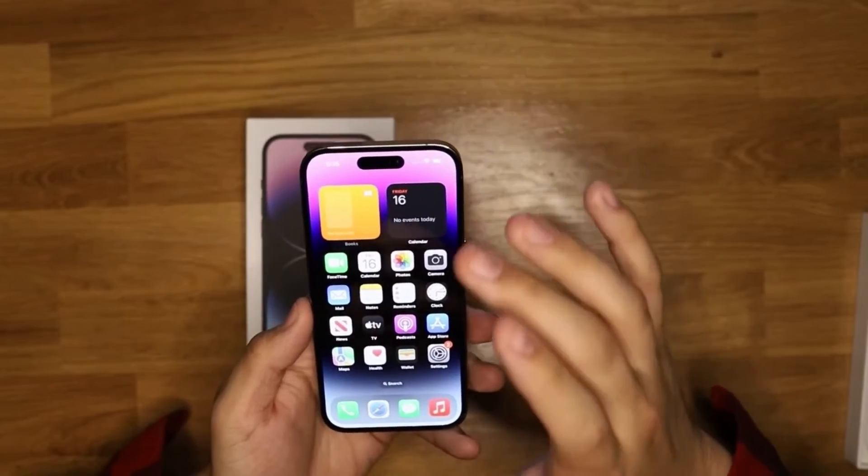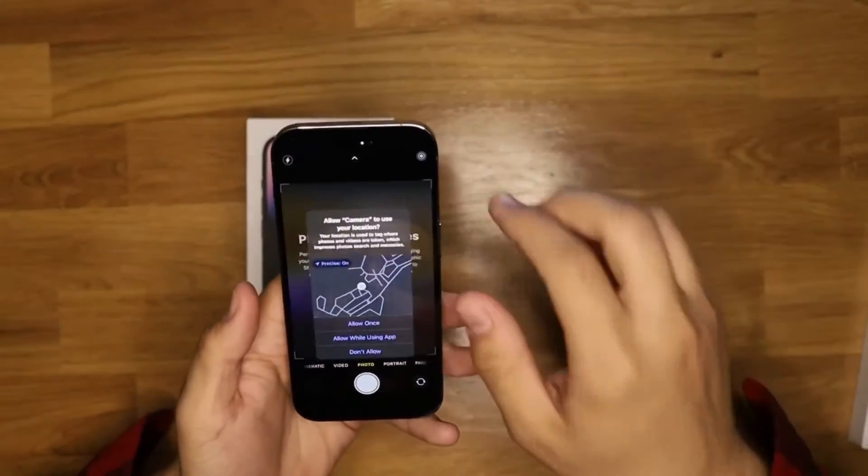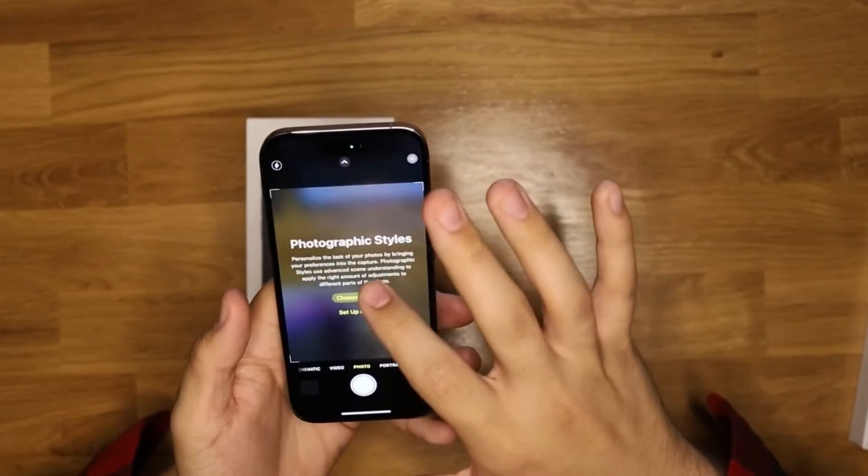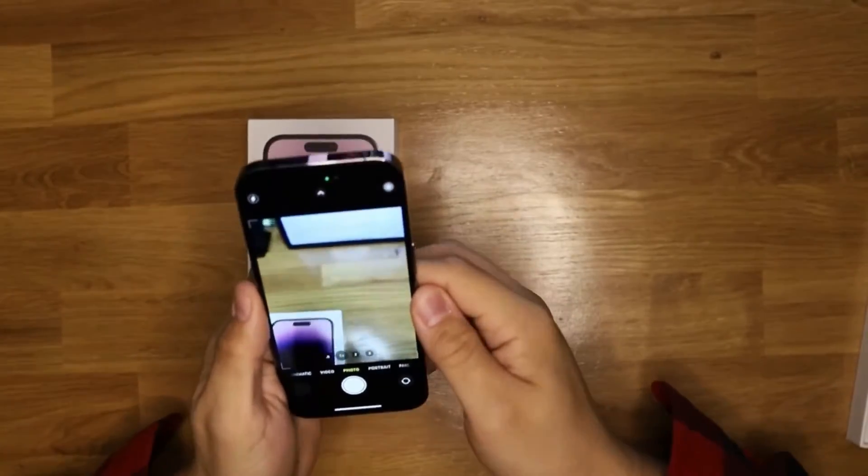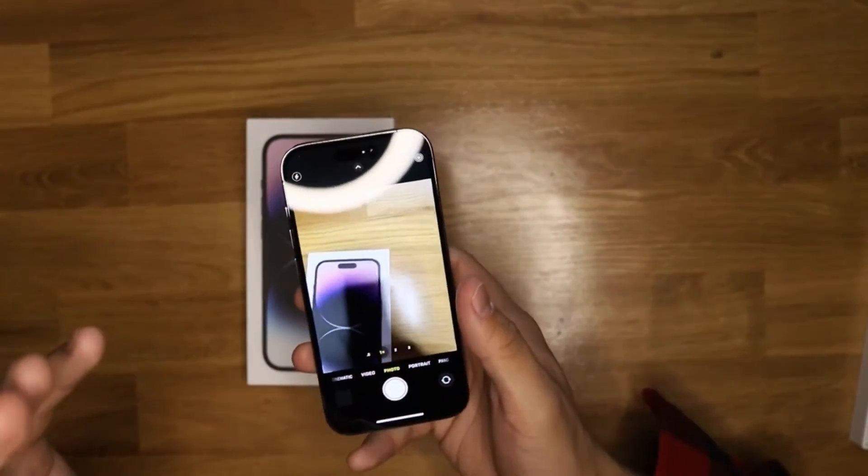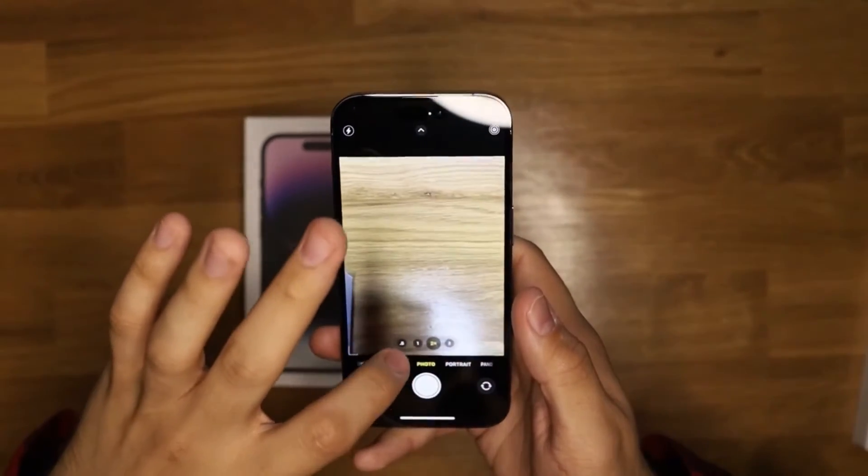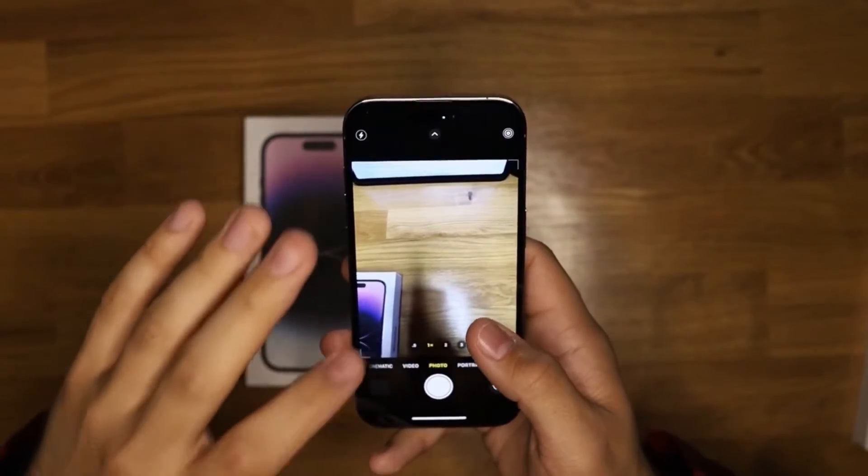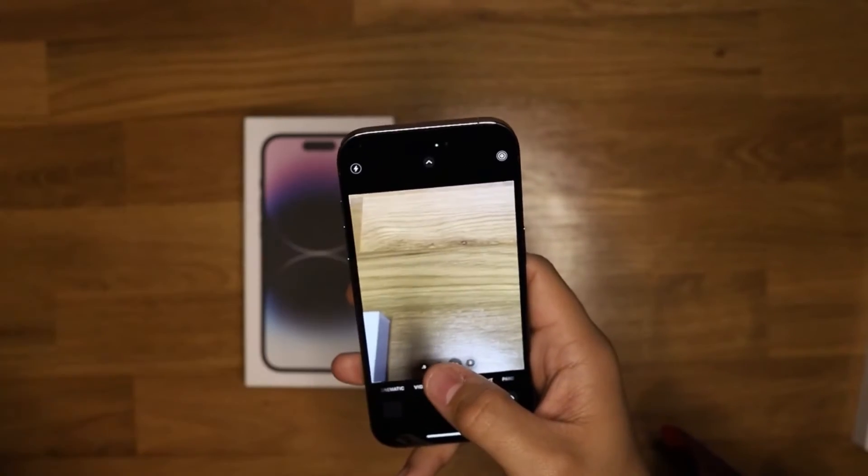But what I'm most excited about, because I do photography, is it has a 48 megapixel camera on it. Going from last year's 12, it is only the standard camera, but you also get this two times. Instead of just having the one times and three times zoom and the 0.5, you have a two times zoom. Now you're like 'oh don't need it,' but it is so much more helpful than you think it is.